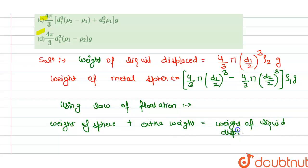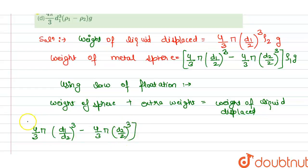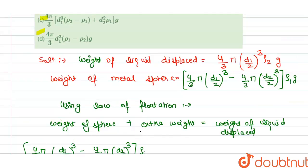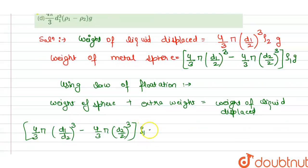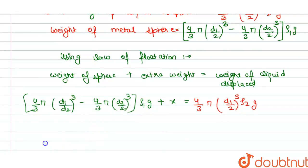Substituting values, the weight of the sphere plus the extra weight x gives: (4/3)π(d1/2)³ minus (4/3)π(d2/2)³ times rho1 times g, plus x, equals the weight of liquid displaced, which is (4/3)π(d1/2)³ times rho2 times g.